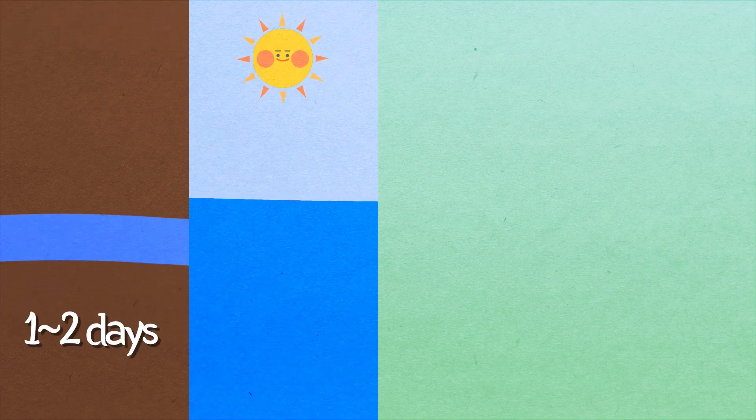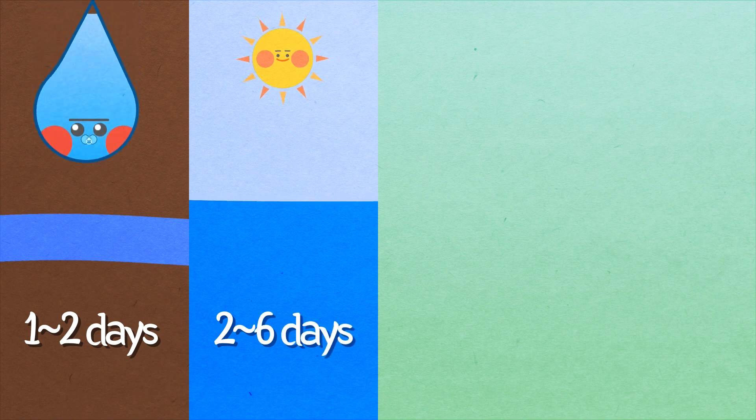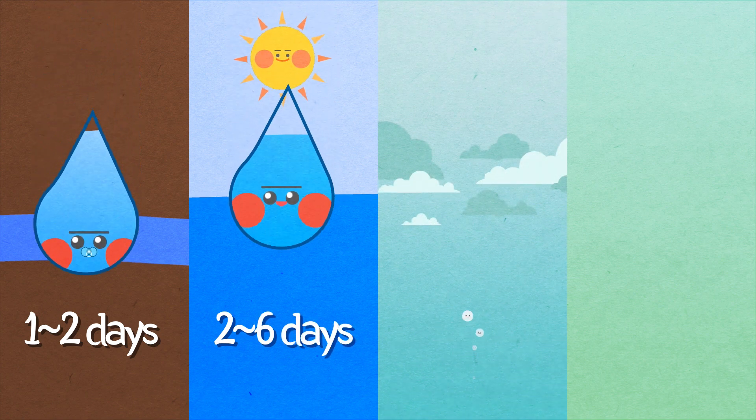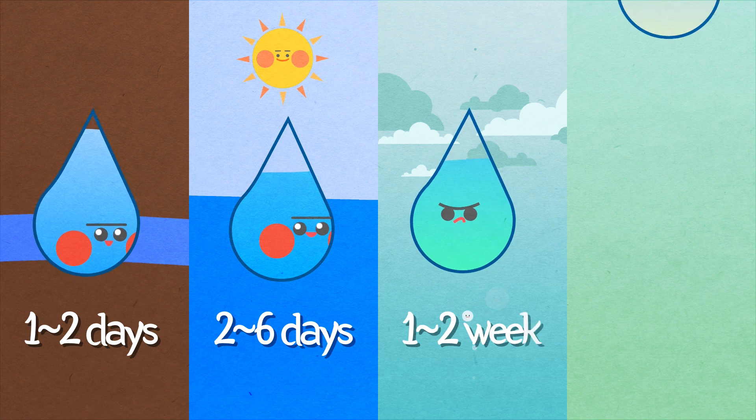This water cycle process takes a very long time. If it seeps into the ground, it stays there for one to two days. But if it flows into the river, it will stay about two to six days. If it becomes water vapor in the air, it will stay for one to two weeks.